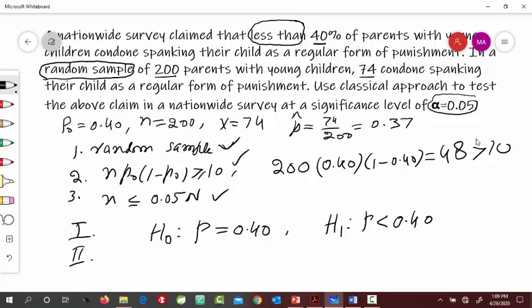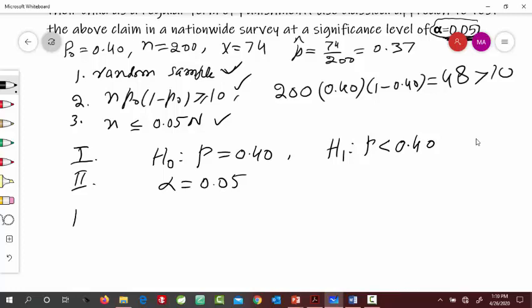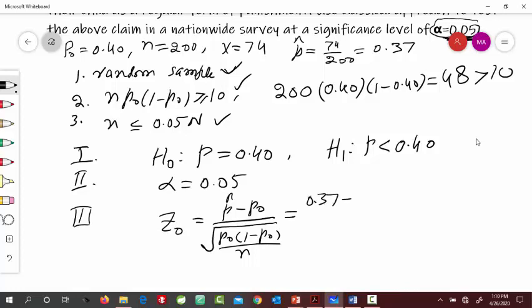Step 2 is find alpha. Alpha is given, so alpha is 0.05. And then step 3 is compute test statistic, that is Z sub 0. And that is with the equation P-hat minus P0 by square root of P0 times 1 minus P0 by N. Plug in these values: 0.37 minus 0.40 divided by square root of 0.40 times 0.60 by 200, and this would approximately become equal to negative 0.87.